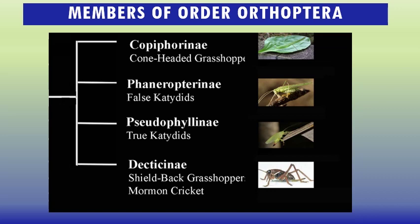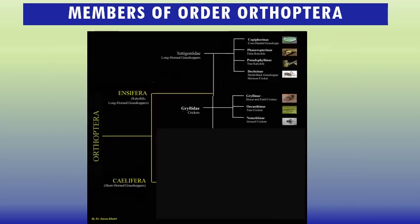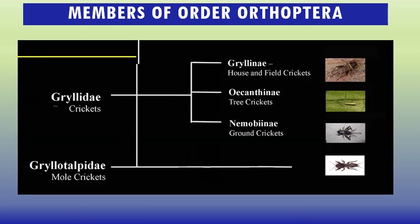Gryllidae consists of three sub-families: Gryllini (house crickets), Oecanthini (tree crickets), and Nemobini (ground crickets). Another family, Gryllotalpidae, contains the mole crickets, which are very common.